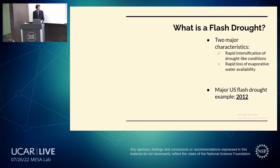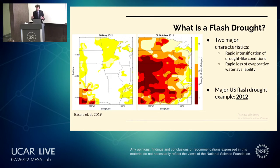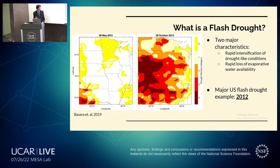To begin, it's really important that we understand the major characteristics behind what a flash drought really is. First is a rapid intensification of drought-like conditions, where we usually see an increase in temperatures and a decrease in precipitation over a region. The second is a rapid loss of evaporative water availability, typically in the ground and soil. A prime example was the flash drought event in 2012, when research really ramped up. Jeffrey Becerra in his 2019 article examined this event across the Great Plains in the Midwest, noting a rapid transition from non-drought state to extreme and exceptional drought from May to October 2012.